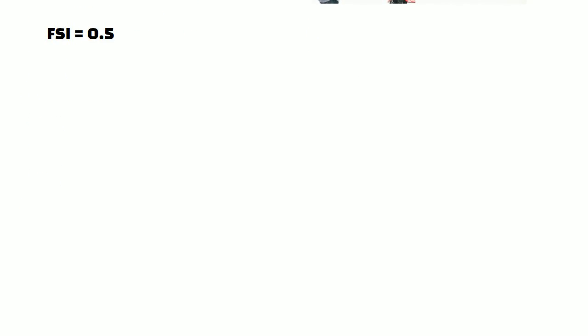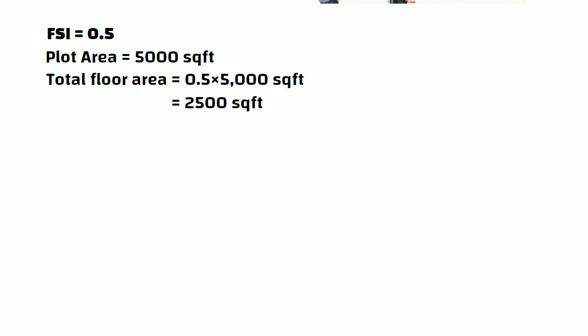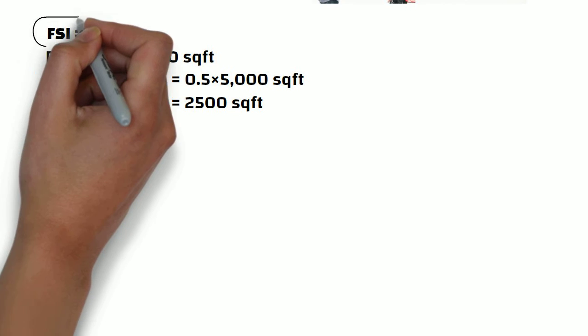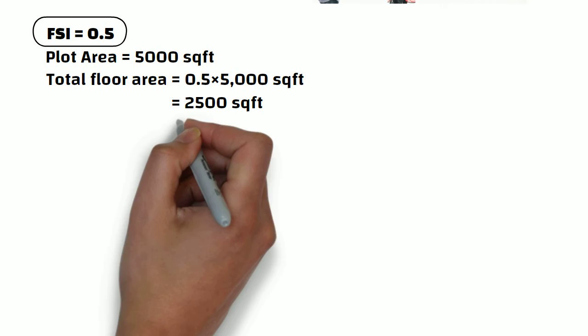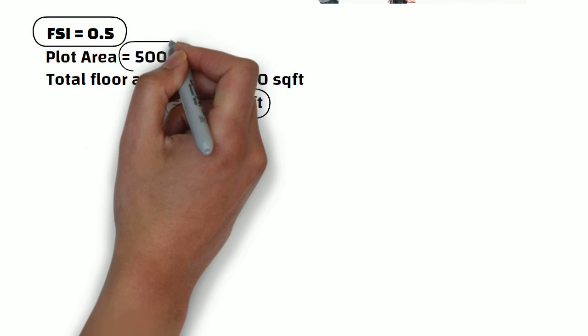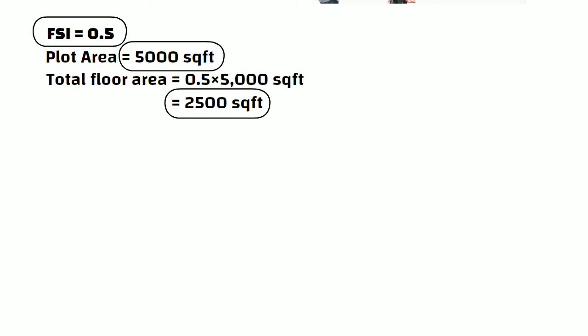Now, let us take an example of 0.5 FSI for a plot area of 5000 square feet. Total floor area is equal to 0.5 into 5000 square feet, which is equal to 2500 square feet. With an FSI of 0.5, you can construct a total covered area of 2500 square feet on a 5000 square feet plot. This means that only half of the plot area can be utilized for construction, as the FSI is lower.